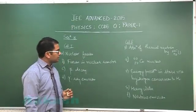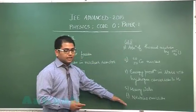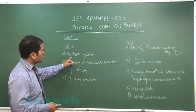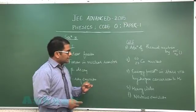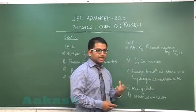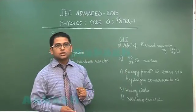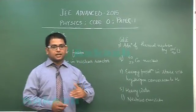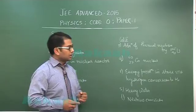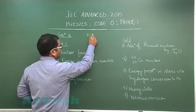Section 3 is a matrix match with column 1 and column 2 regarding nuclear processes. The first one is nuclear fusion, which clearly leads to option R because nuclear fusion is the process involved in energy production in stars via hydrogen conversion to helium. In the middle, deuterium is formed. Nuclear fusion is related to energy production in stars via hydrogen conversion to helium.